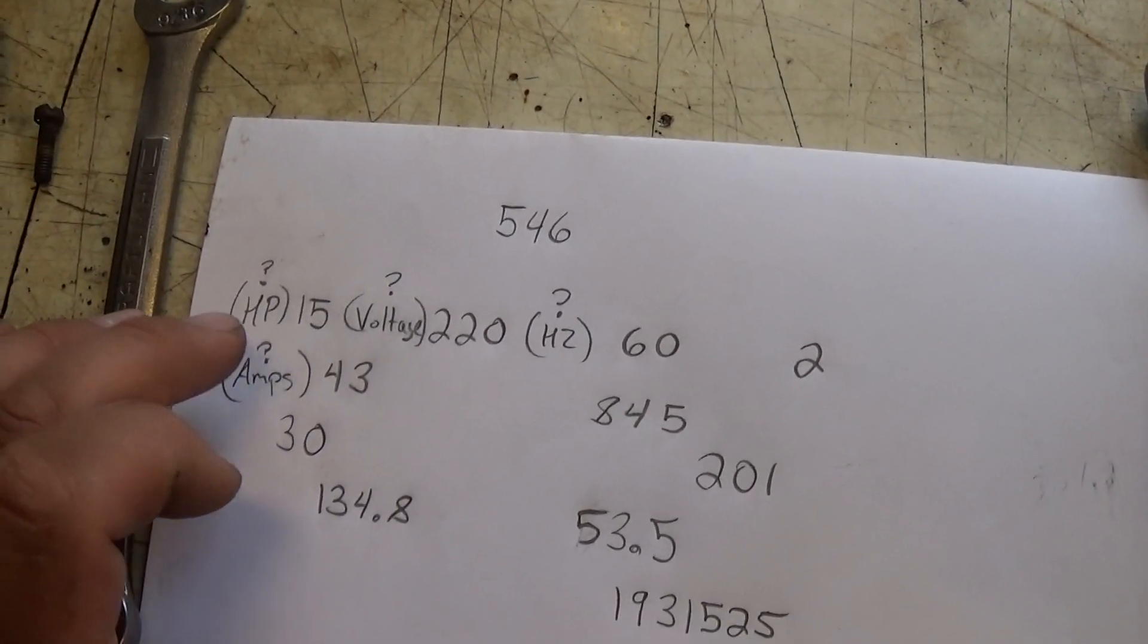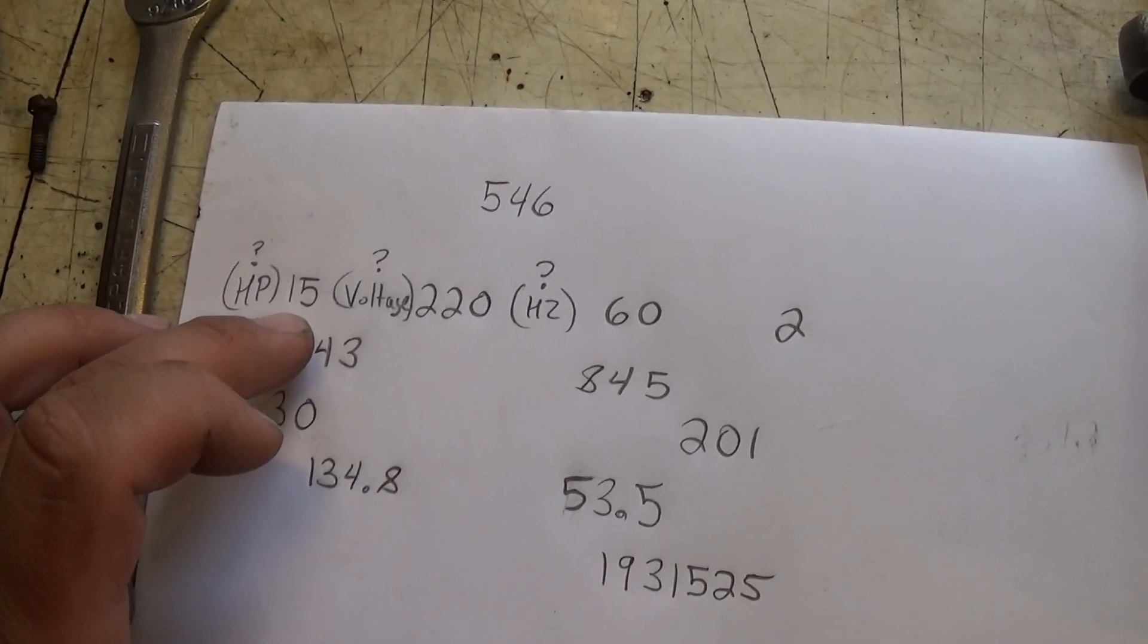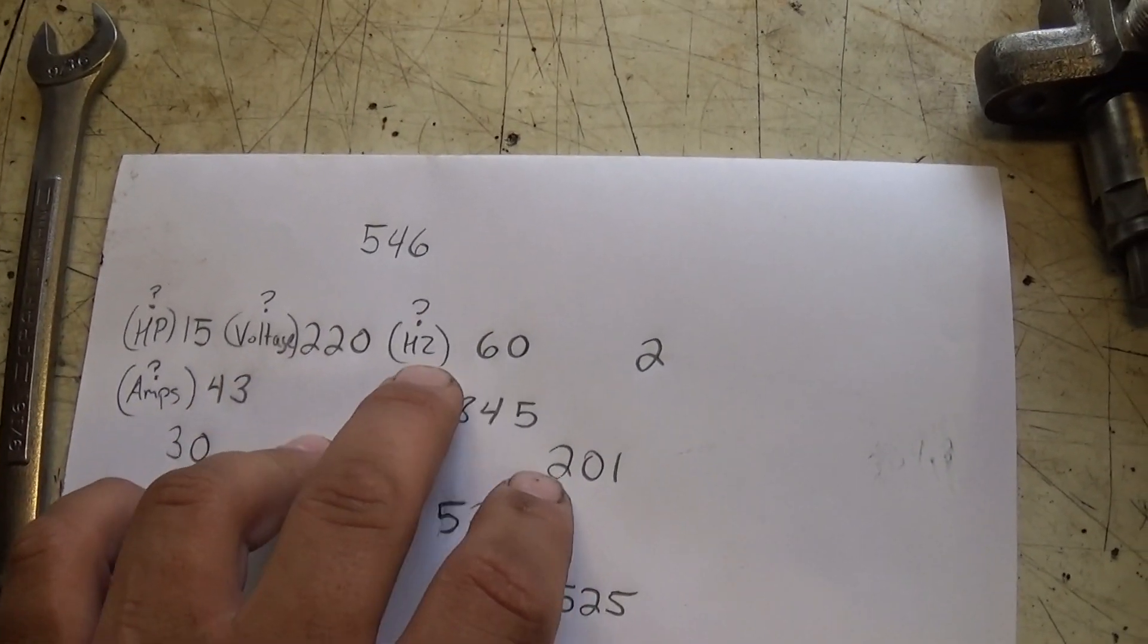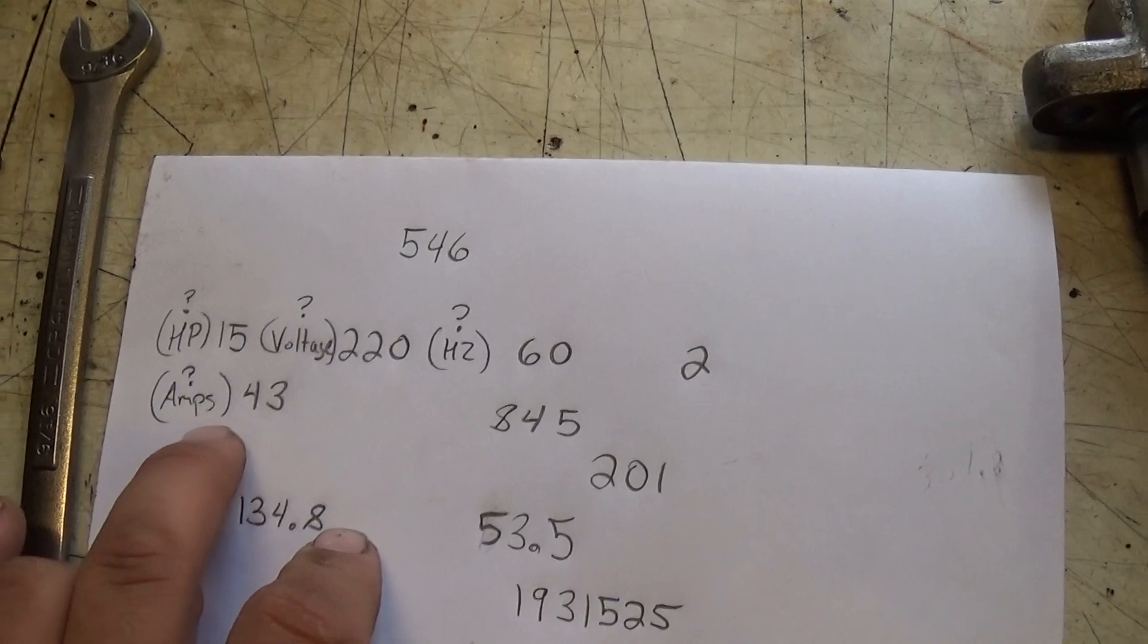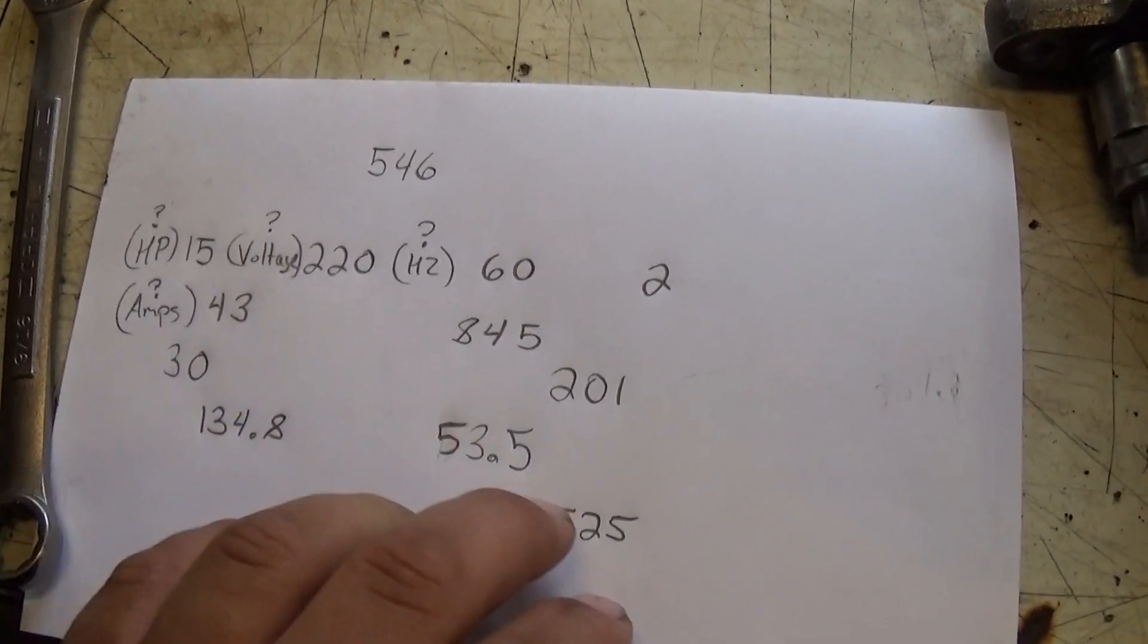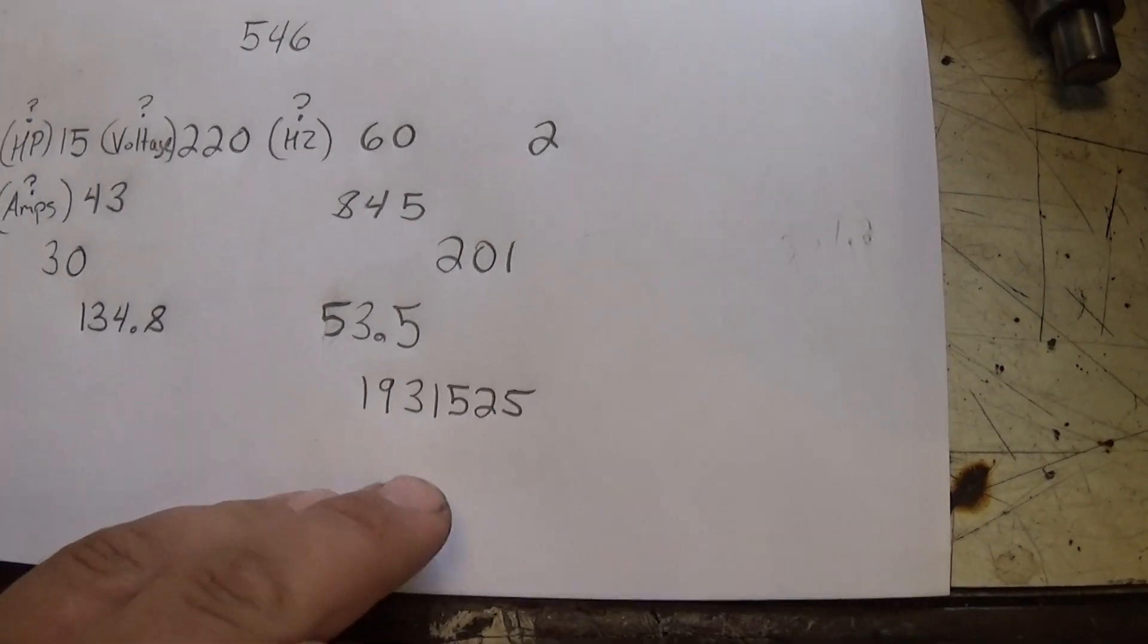I penciled it in here, 15, I'm thinking that may be the horsepower, 220, possibly the voltage, 60 hertz, and perhaps the current, 43 amps. The rest of these I'm not sure about, other than that may be a serial number of some kind.